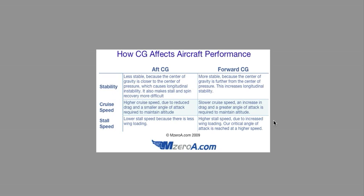These three things — stability, cruise speed, and stall speed — are things that are going to come up on check rides and when you're flight planning, doing weight and balance for taking people places. You really need to know and commit these to memory. This graphic is available on MZeroA.com for download so you can save it, print it out, and keep it in your flight bag or binder.